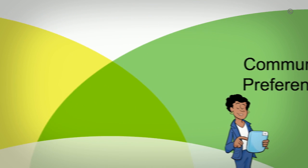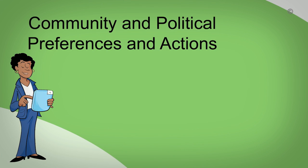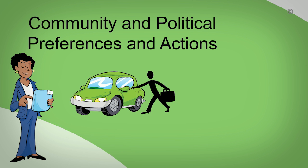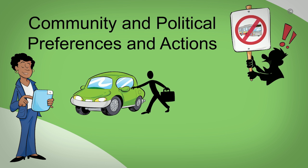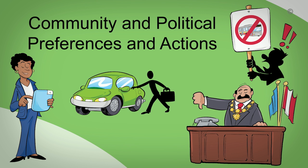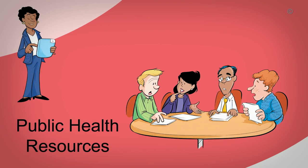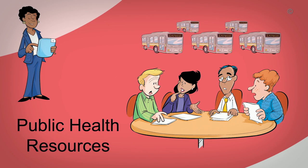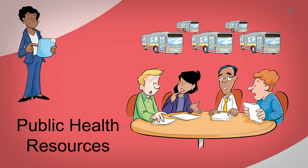In assessing community and political preferences, you find that most residents in your community travel to other jurisdictions for work. You also learn that residents are worried about noise levels that could result from public transit. Local politicians are reluctant to increase property taxes to pay for public transit and are unsure whether neighbouring jurisdictions will contribute. Finally, you assess the resources required to develop and implement strategies to alter the built environment and determine that the cost would be substantial.